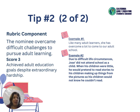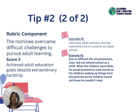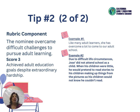A tip: a lot of nominations will say something vague like example one — 'like many adult learners, she has overcome a lot to come to our adult school.' Compare that to example two, where the story shows the student overcame many life circumstances: they weren't able to go to school, they weren't able to read to their children, so the person made stories up. That shows this person overcame a ton of obstacles.